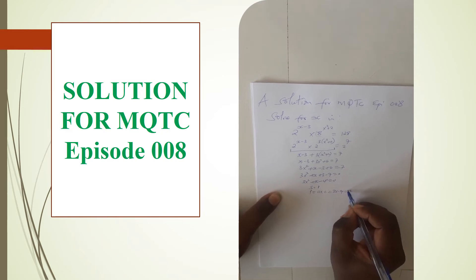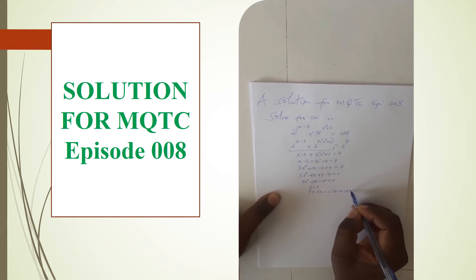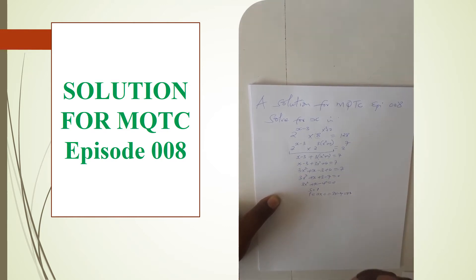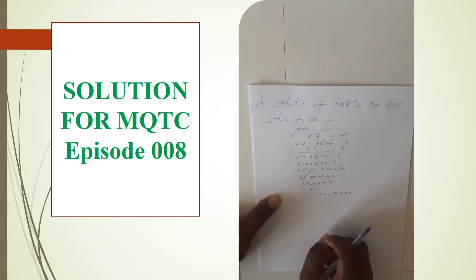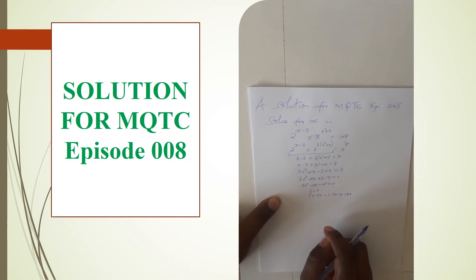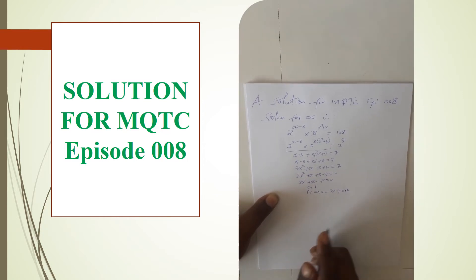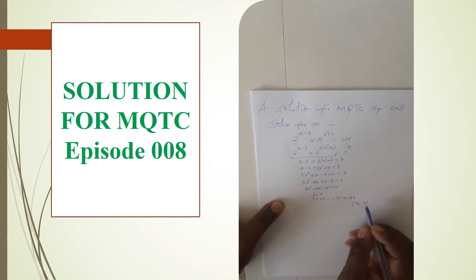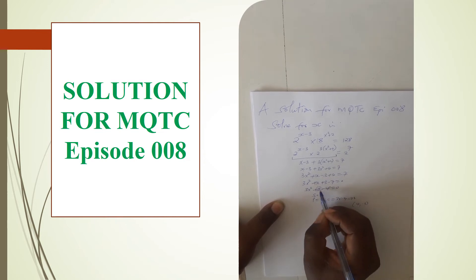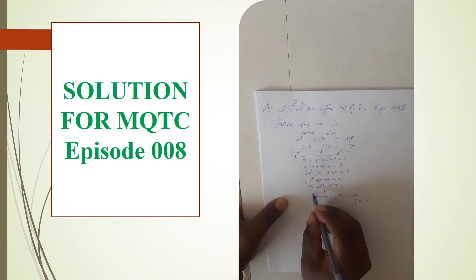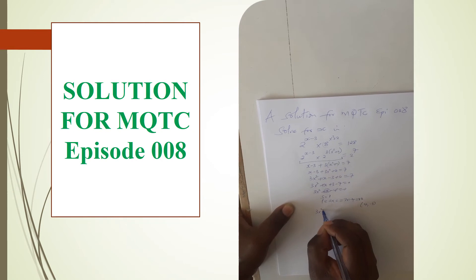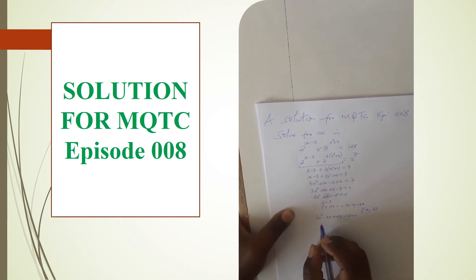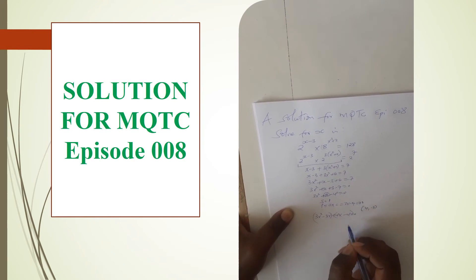So our product is minus 12 and our sum is 1. We look for two numbers that when added give 1 and when multiplied give minus 12. The numbers will be positive 4 and minus 3. So where we have the middle x term, we replace it with these two, giving: 3x² minus 3x plus 4x minus 4 equals 0.